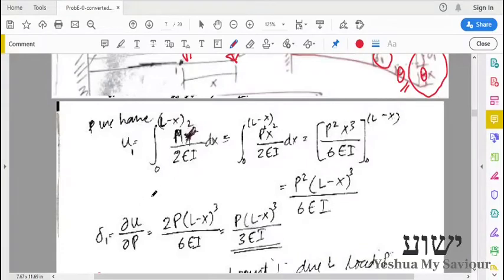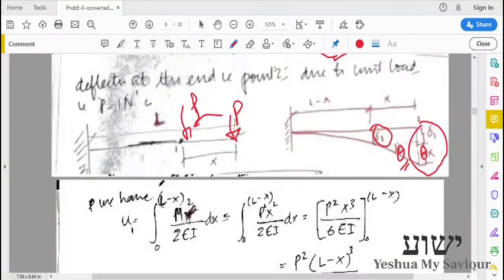So for strain energy method, what we do is, we have this distance is l minus x. So the amount of energy due to application of this load p can be written as integral 0 to l minus x. That is, m square here is, m is equal to p times x. That is, at a distance x.